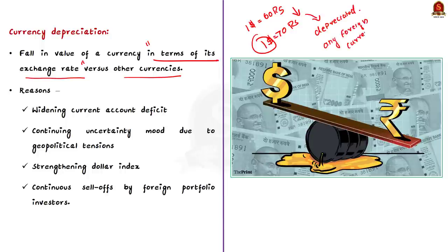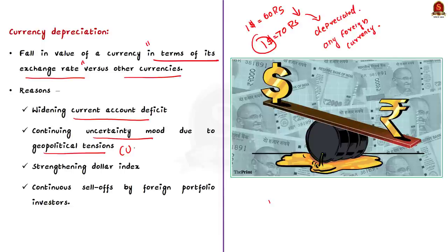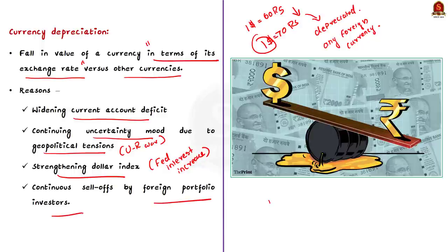Why is depreciation happening? It can occur due to a number of factors like macroeconomic factors, interest rate differentials, political instability, or even fear among investors. In the case of the current rupee depreciation, the factors include a widening current account deficit, continuing uncertainty brought on by geopolitical tensions — that is, the Ukraine-Russia war — a strengthening dollar index due to rising interest rates by the US Federal Reserve, and a continuous sell-off by foreign portfolio investors. All of this has put pressure on the rupee, causing our currency to depreciate.